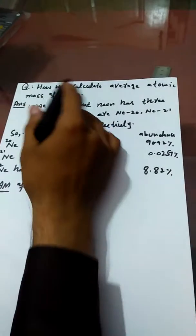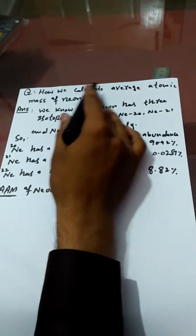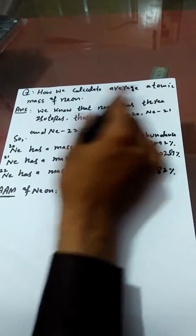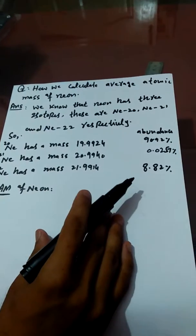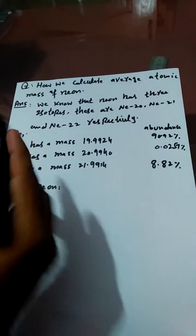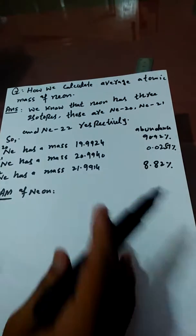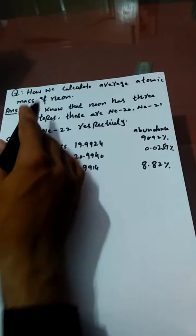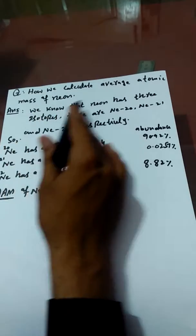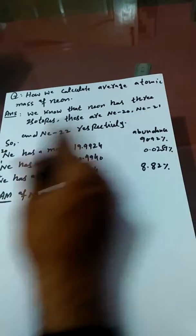The question is: how do we calculate the average atomic mass of Neon? To calculate the average atomic mass of Neon, we know that Neon has three isotopes.